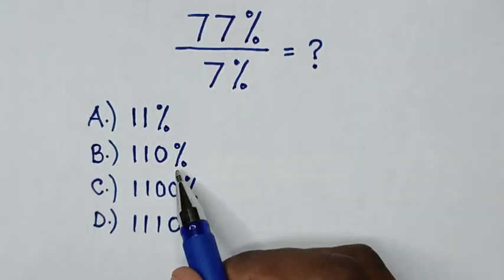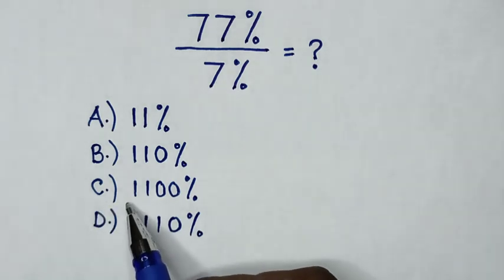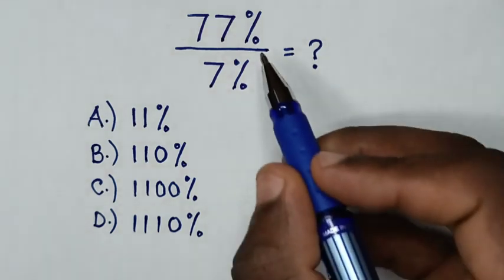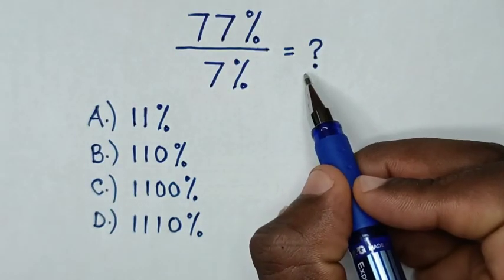11%, B, 110%, C, 1100%, D, 1110%. So first we'll convert both of these into decimal equivalents.